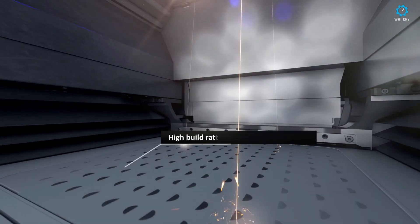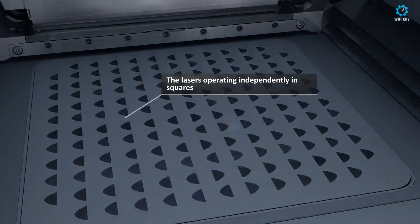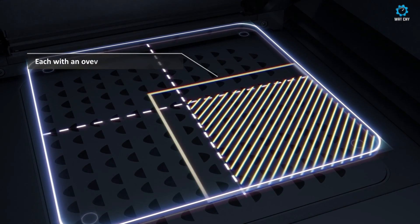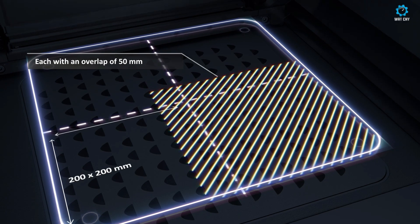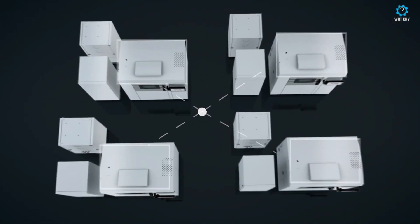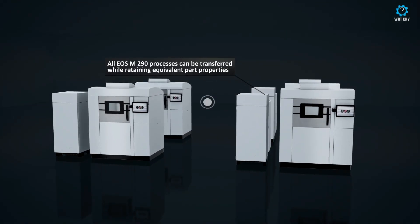One of the standout features of the EOS M404 is its layer resolution capabilities, ranging from 20 microns to 100 microns, allowing for ultra-precise parts. The printer supports a wide range of materials, including stainless steel, titanium, aluminum, and inconel, making it a versatile choice for industries requiring high-performance materials.